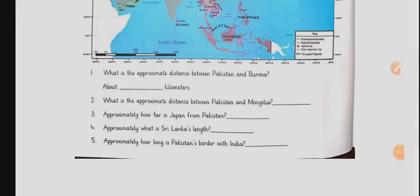Now that I have told you how to solve this worksheet, let us look at the questions. What is the approximate distance between Pakistan and Burma? You will use the cm side of the ruler and you will measure it and then you will multiply it with 10 and write your answer here in the blank. What is the approximate distance between Pakistan and Mongolia? Approximately, how far is Japan from Pakistan? Approximately, what is Sri Lanka's length? And approximately, how long is Pakistan's border with India?